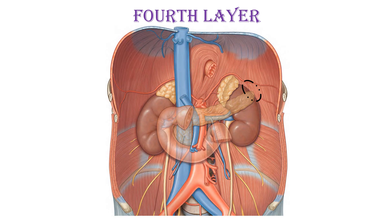When we come to the fourth layer, we add the duodenum and the pancreas with the spleen — marked by black dots — lying between the tail of the pancreas and the left kidney. The arrangement on the left side is: kidney, then spleen, then the tail of the pancreas.